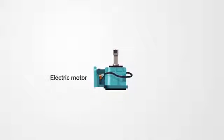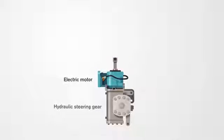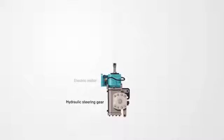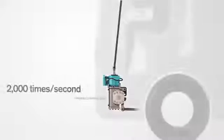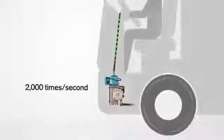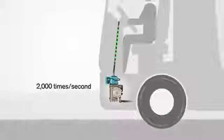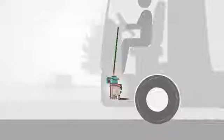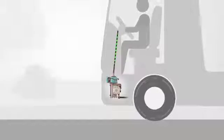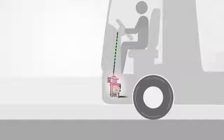Volvo Dynamic Steering works through a precisely controlled electric motor mounted on top of the hydraulic steering gear. The motor is controlled 2,000 times per second based on input from the driver and onboard sensors. Its purpose is to provide precise steering control in every situation.